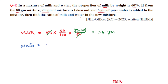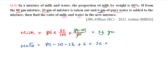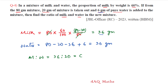After removing 20 grams of mixture, milk is 36 grams. Water in remaining mixture is 60 minus 20 = 40, and after adding 6 grams of pure water, total water is 30 grams. So milk is 36 grams and water is 30 grams. The ratio of milk to water in the new mixture is 36:30, simplified to 6:5. The answer is 6 to 5.